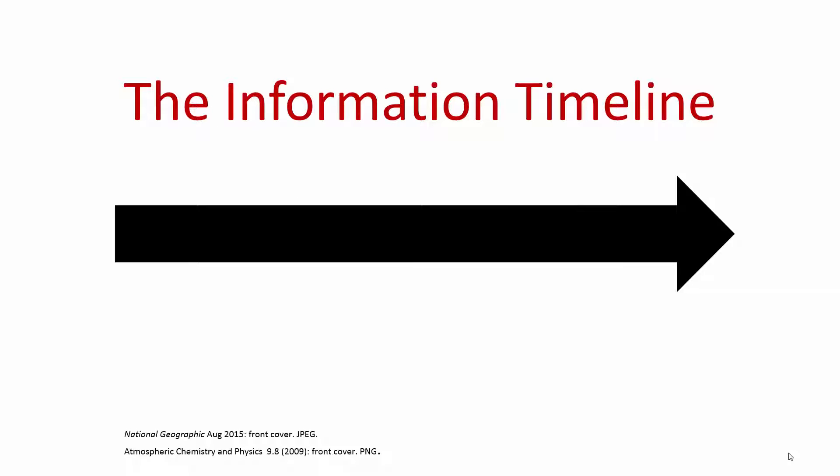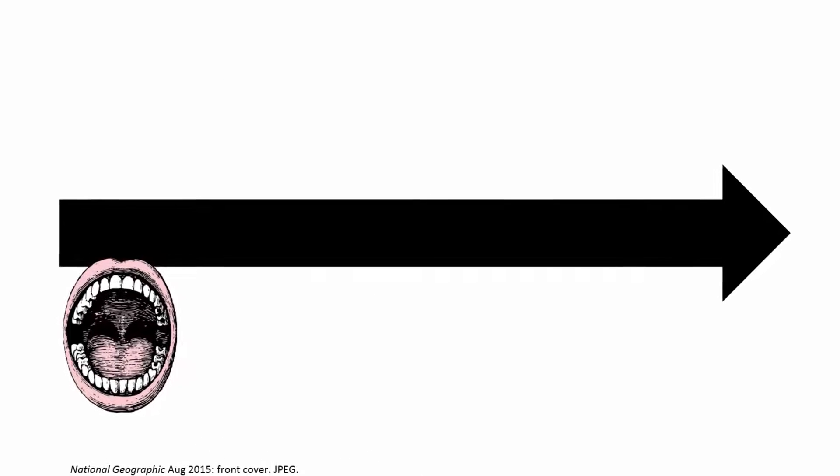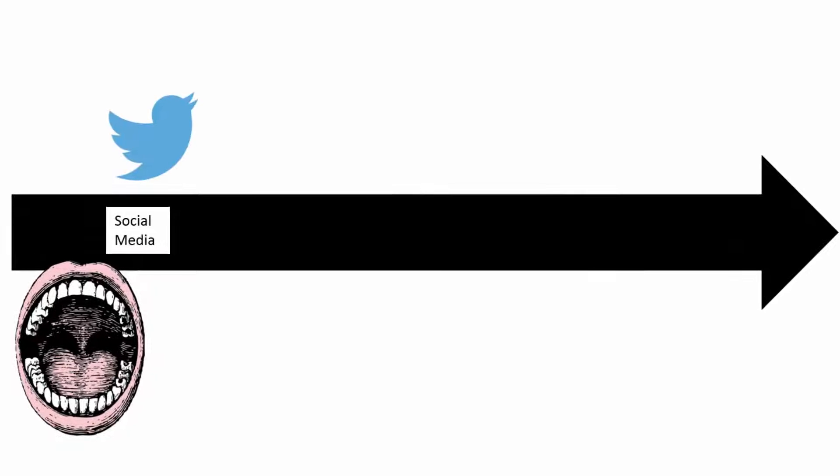First, people talk about it. A lot of information is created by word of mouth. This is extended on social media, with many news stories first appearing on Twitter and then being picked up by other social media outlets.